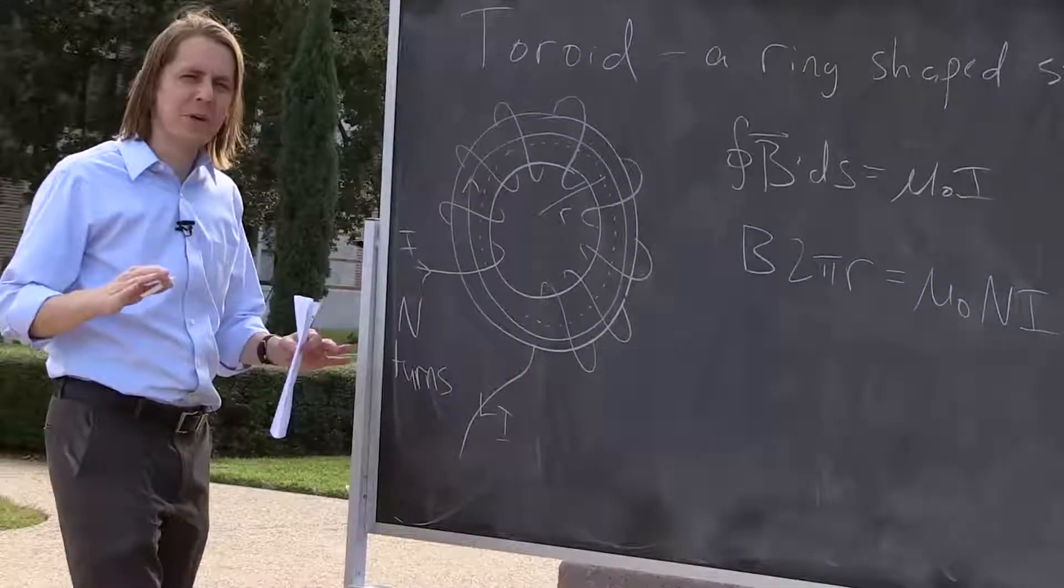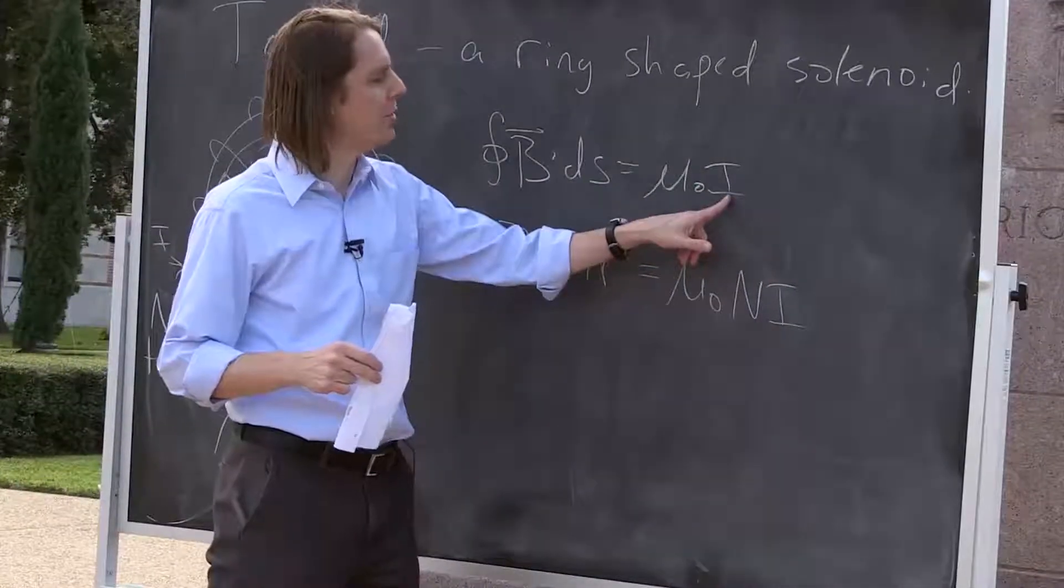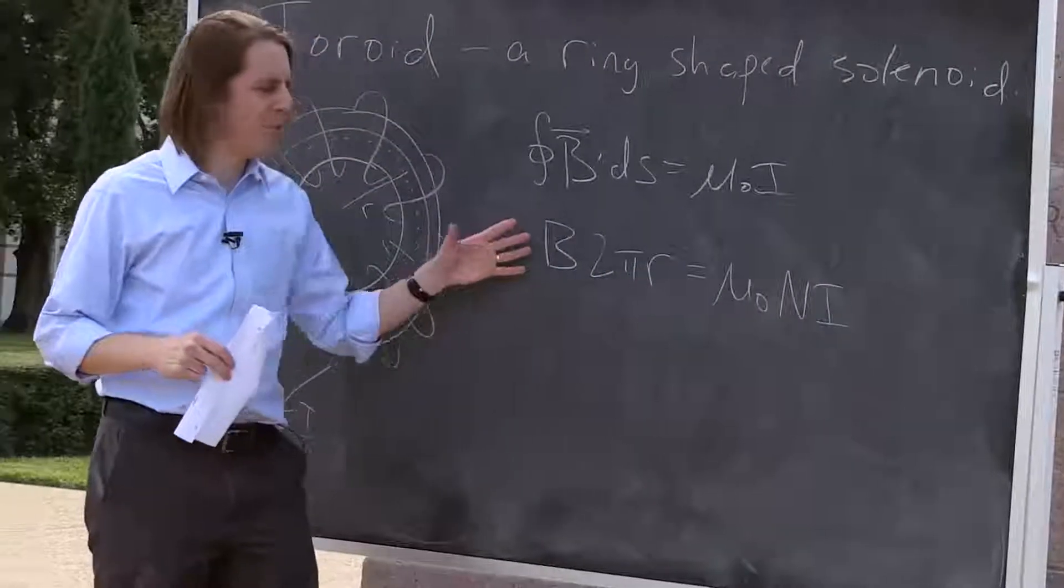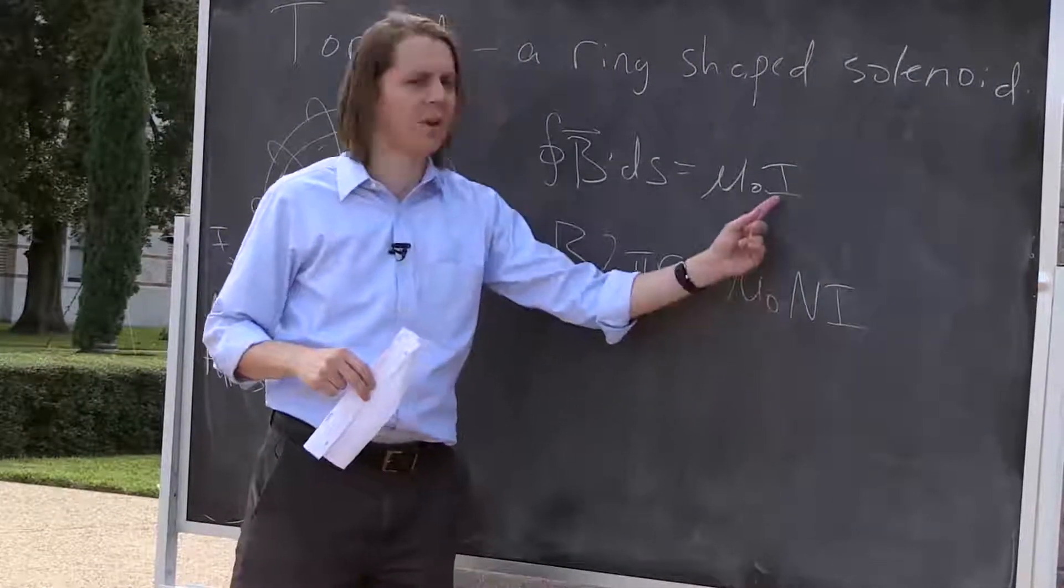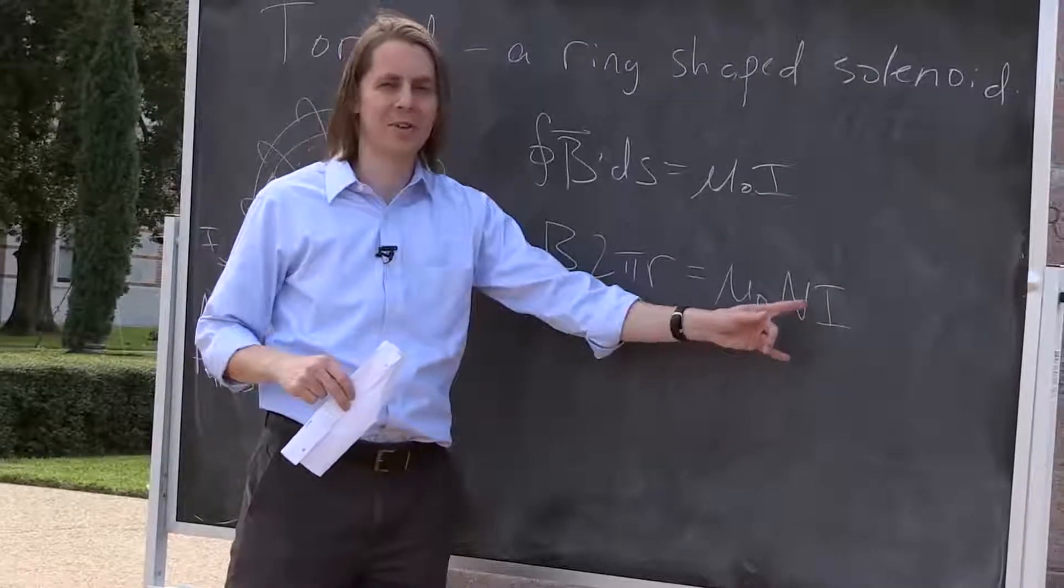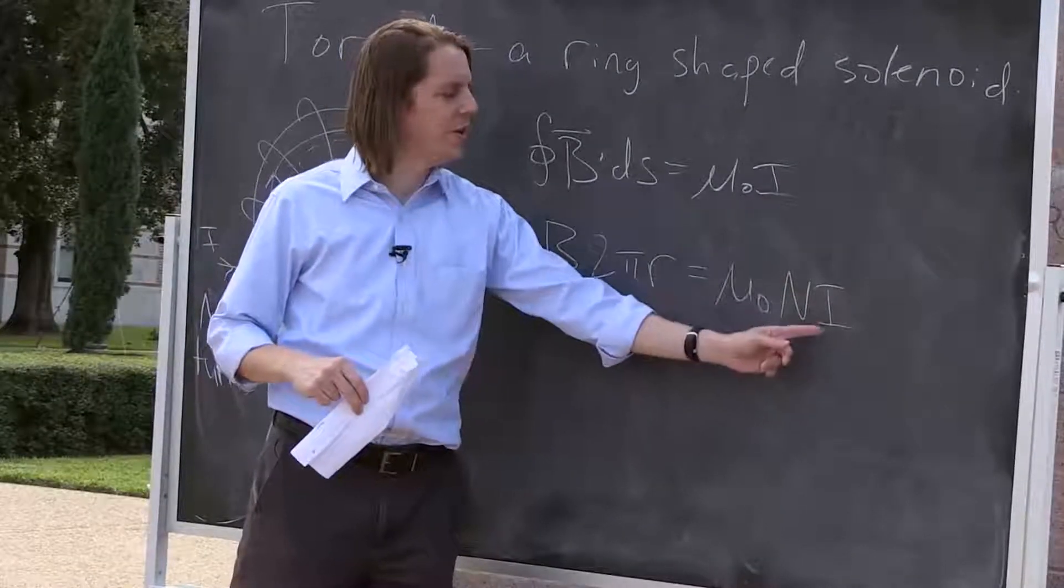You've got to keep in mind the difference between the general expression of the law, where this means the total current, and then when we apply it to our problem, where now this means the current in the wire. That's why there's an N times I here and there's just an I here. There's actually different I's. The general current, the current in the wire.